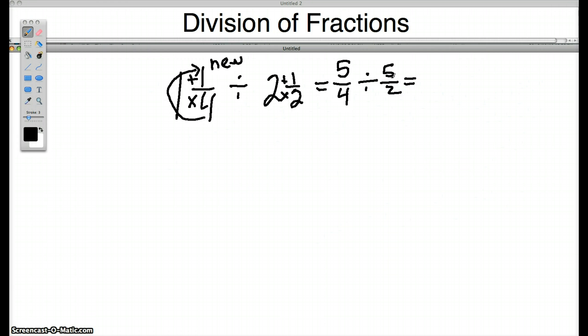Now remember we have a division problem with two fractions. We have to rewrite this because we cannot divide fractions as a multiplication problem. 5/4 times the reciprocal of 5/2, which is going to be 2/5.